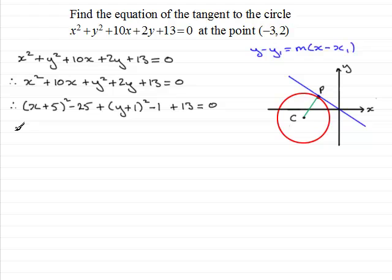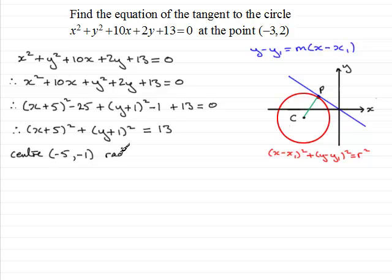So if I now tidy this up, I've got x plus 5 all squared. I've also got y plus 1 all squared. And on the left hand side here minus 25 minus 1 is minus 26 plus 13 is minus 13. So if I add 13 to both sides, this equals 13. And when we have this format, hopefully you remember that the equation of a circle has the form x minus x1 all squared plus y minus y1 all squared equals the radius squared. Then you can see that the center will be at minus 5 minus 1. And the radius will be equal to the square root of 13, root 13 then.